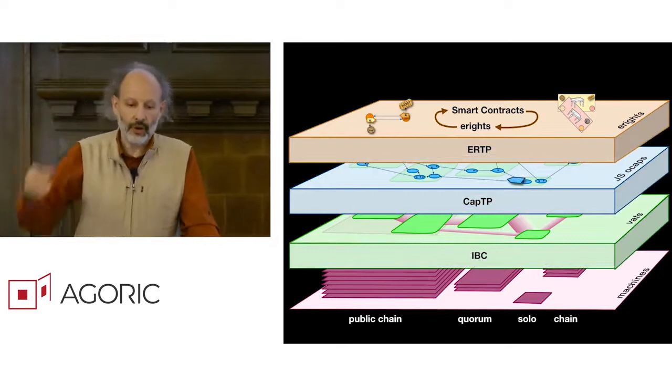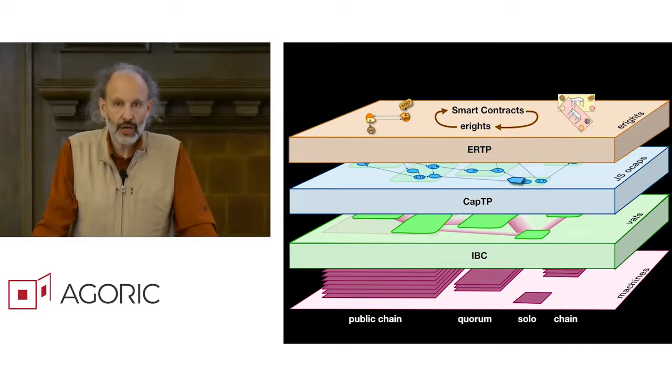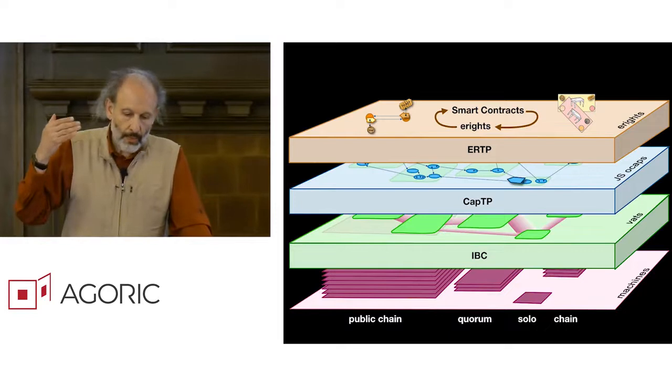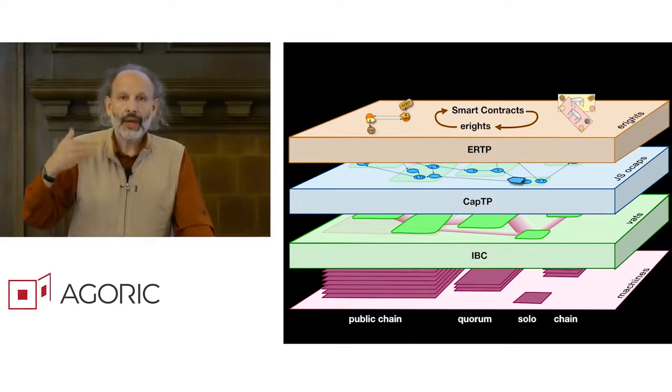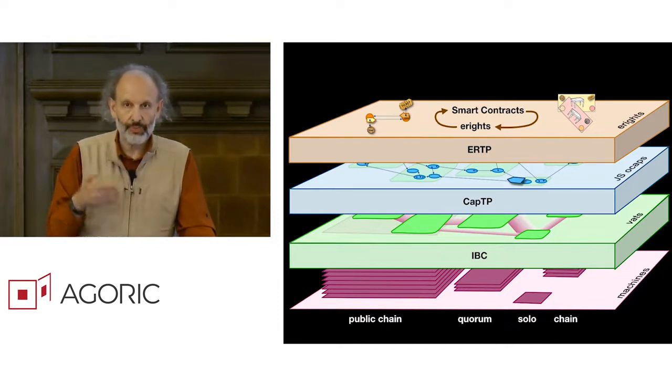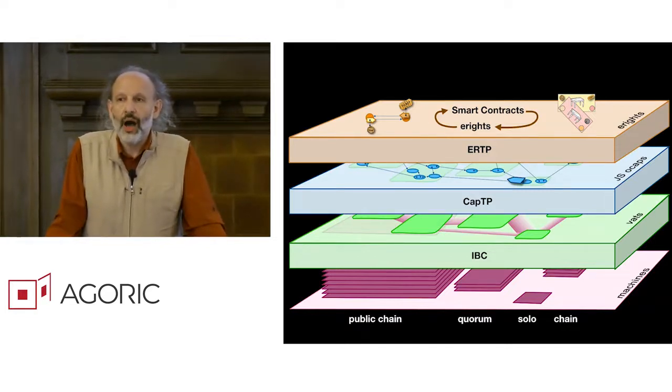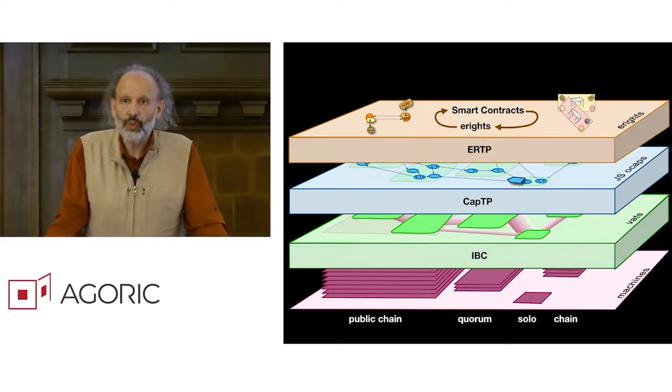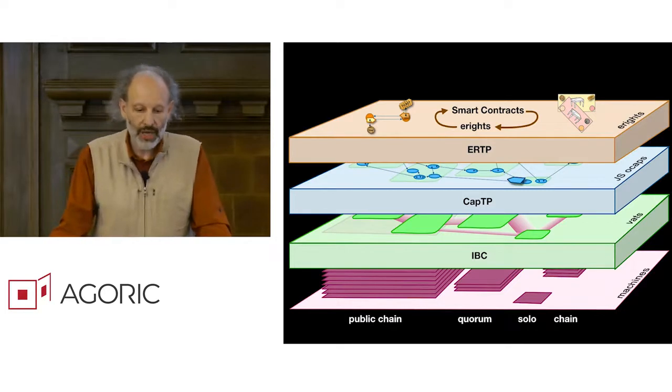These layers are held together by layers of protocol. The IBC layer, the inter-blockchain protocol, builds these secure data pipes out of the system of separate machines. CAPTP, the capability transport protocol, builds the world of distributed objects out of the world of secure data pipes. And then ERTP is the electronic rights transfer protocol, which is now a set of object interfaces for expressing electronic rights in a generic fashion so that we can build highly reusable and composable contracts that can apply to a wide range of rights.